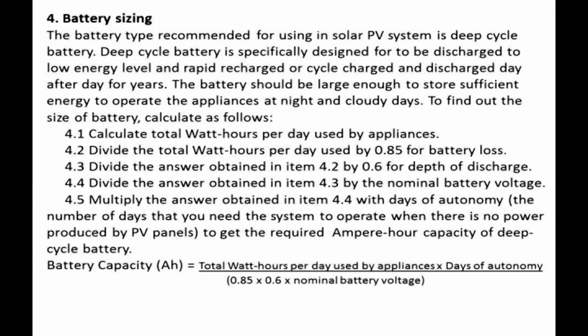Step 4: Battery sizing. The battery type recommended for use in solar PV systems is the deep cycle battery. A deep cycle battery is specifically designed to be discharged to low energy levels and rapidly recharged — cycled day after day for years.